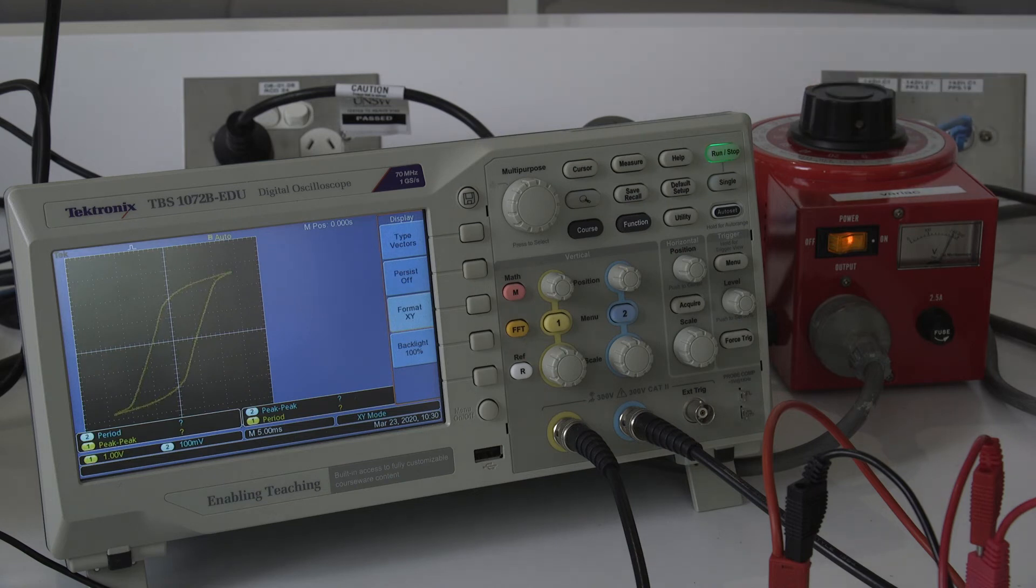What you're seeing here is the x-axis is the measurement of the voltage drop across the resistor, which is being used to control the current in the primary coil. That is related to the magnetic field being induced by the primary coil.